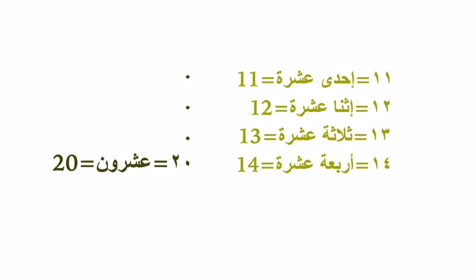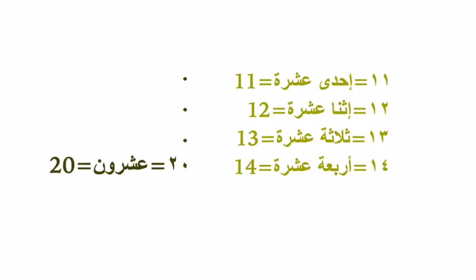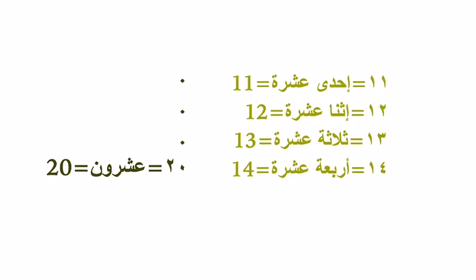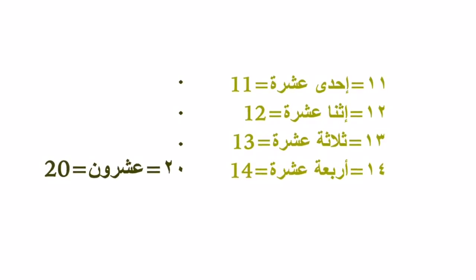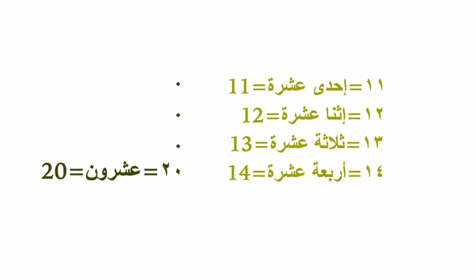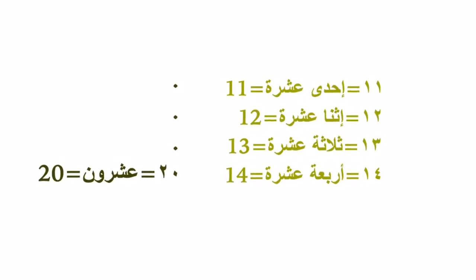Now, eleven and twelve are a little bit different. You take the first number — for example three, four, or five — and put عشرة next to it. But eleven is not واحد عشرة, it's إحدى عشرة, and twelve is not إثنان عشرة, it's إثنى عشرة. So eleven and twelve are special cases.